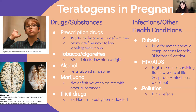Marijuana doesn't have a lot of definitive research suggesting birth defects, low birth weight, or other outcomes we've seen with other agents. It's often paired with other heavier substances, making it hard to isolate its effects. There is some evidence it may affect the placenta's size — larger growth — which could lead to potential neurological deficits.